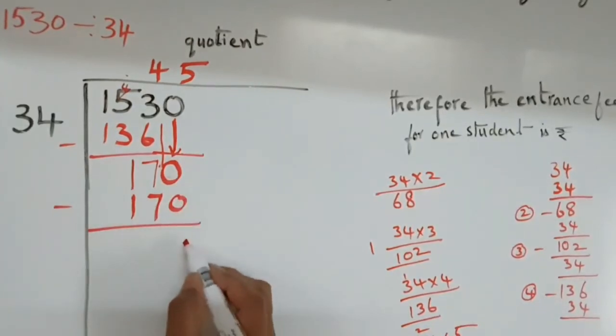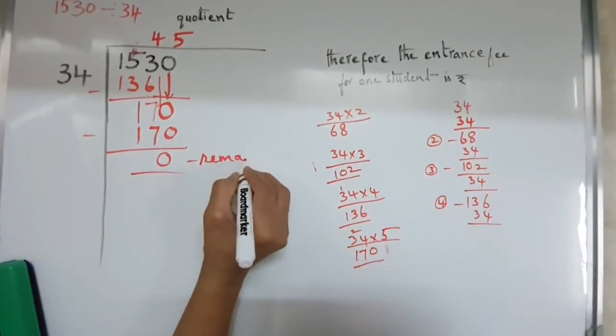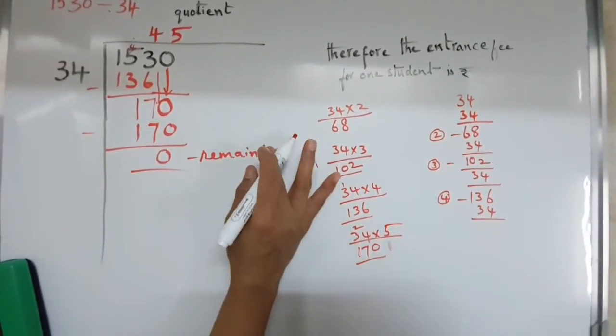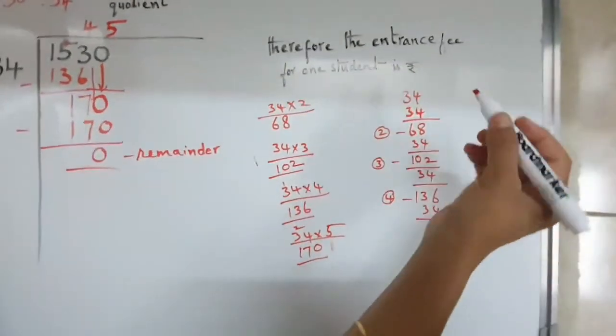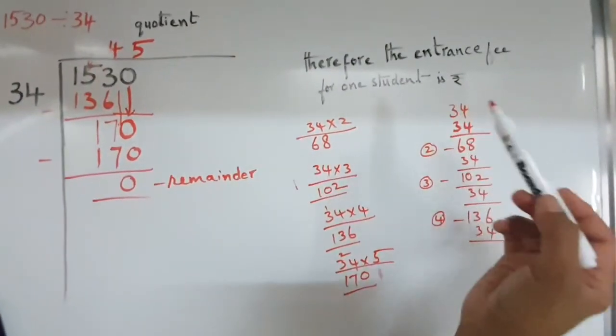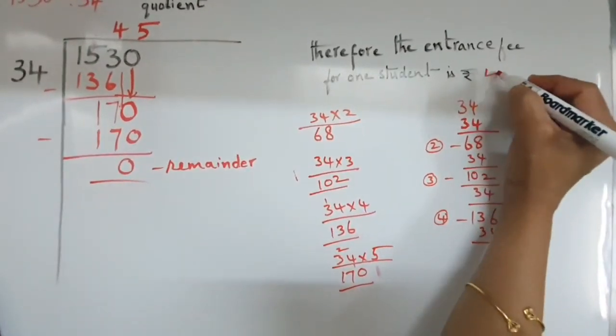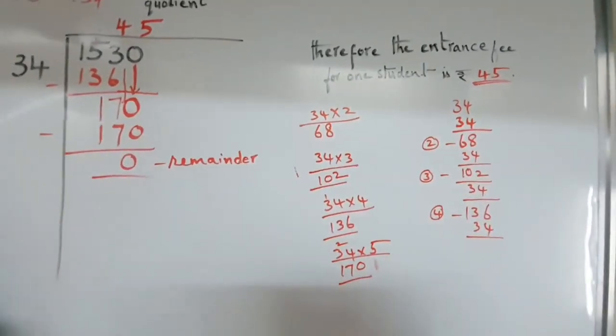Now, we have to subtract. Our remainder is 0. And so, therefore, the entrance fee for one student is rupees 45. This is our quotient.